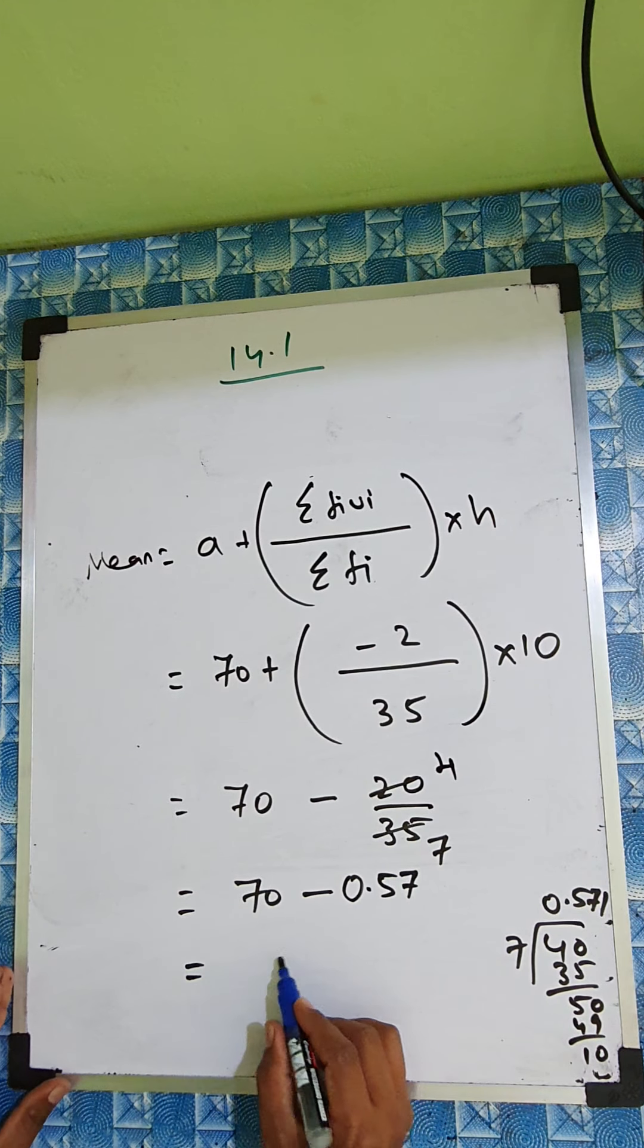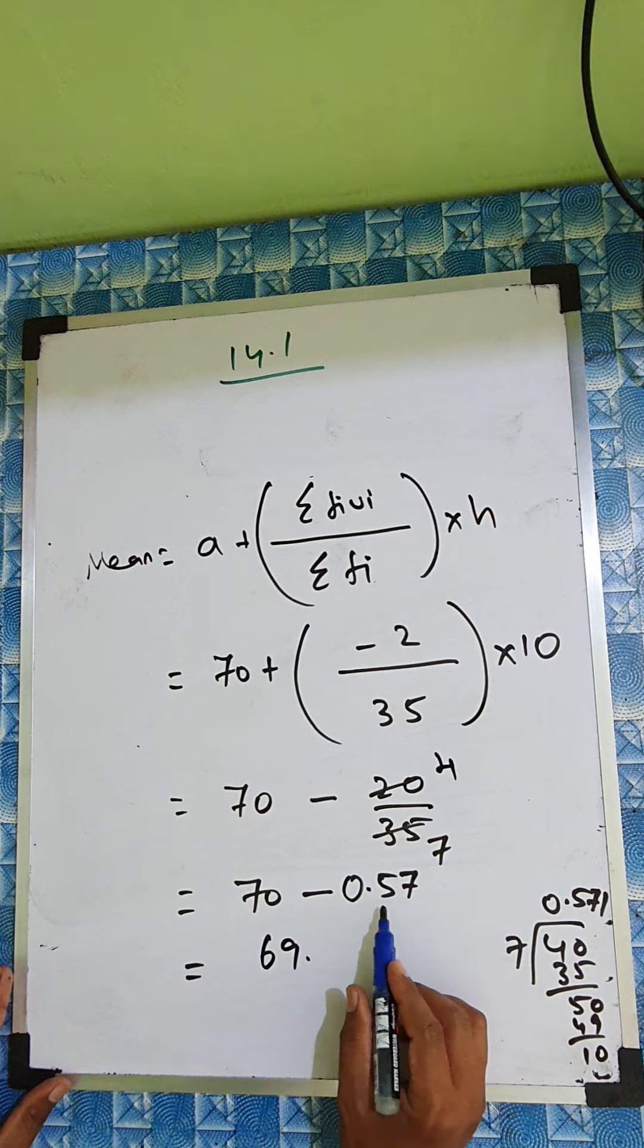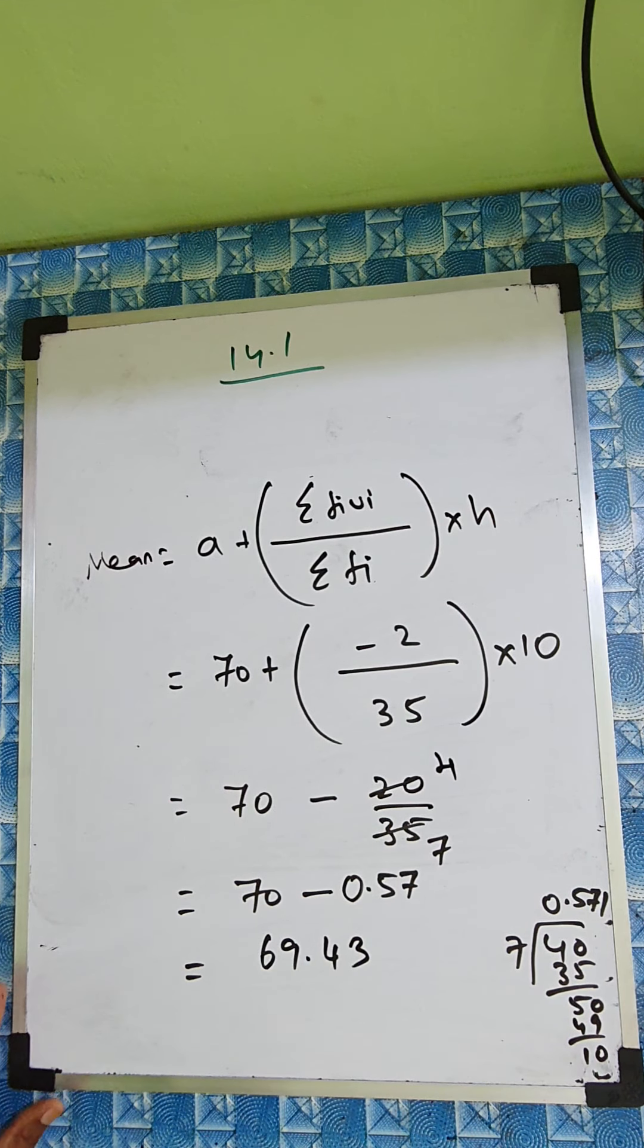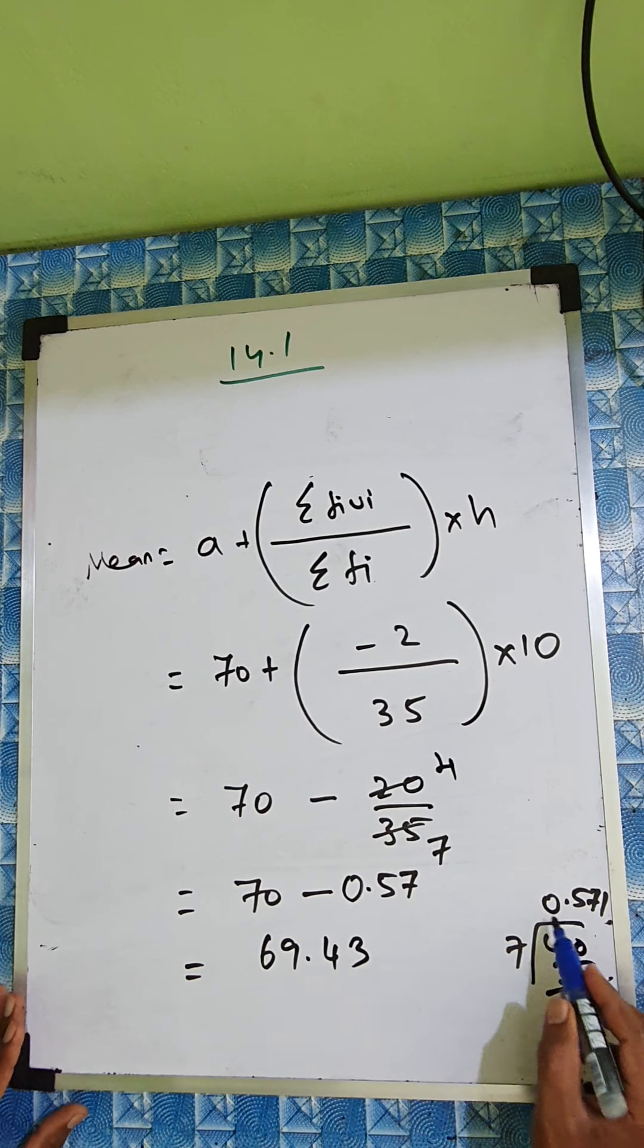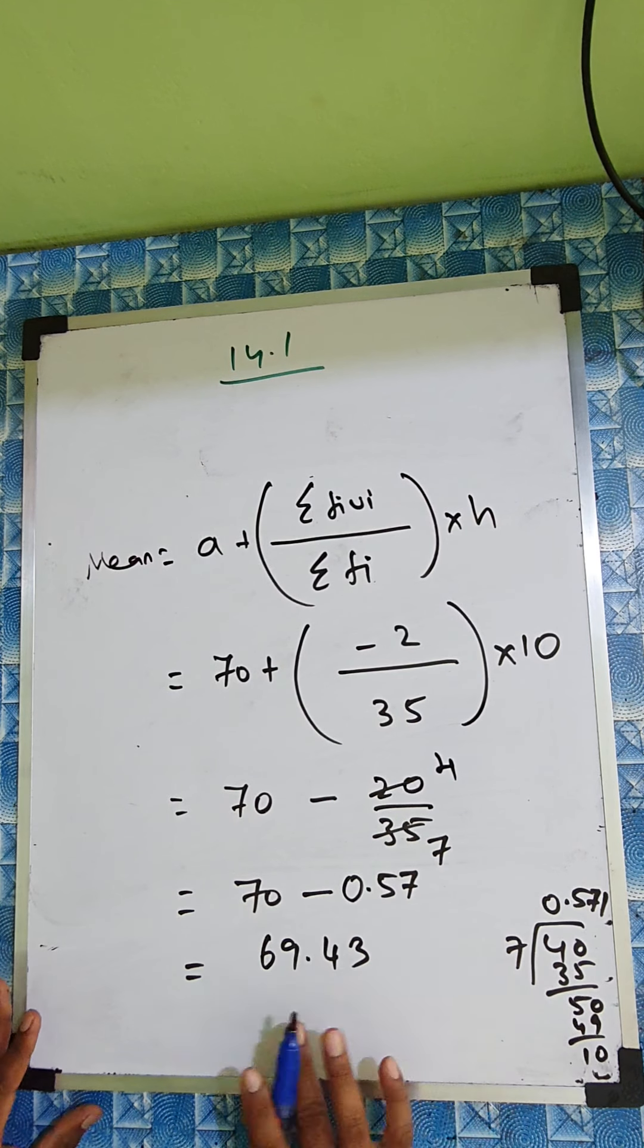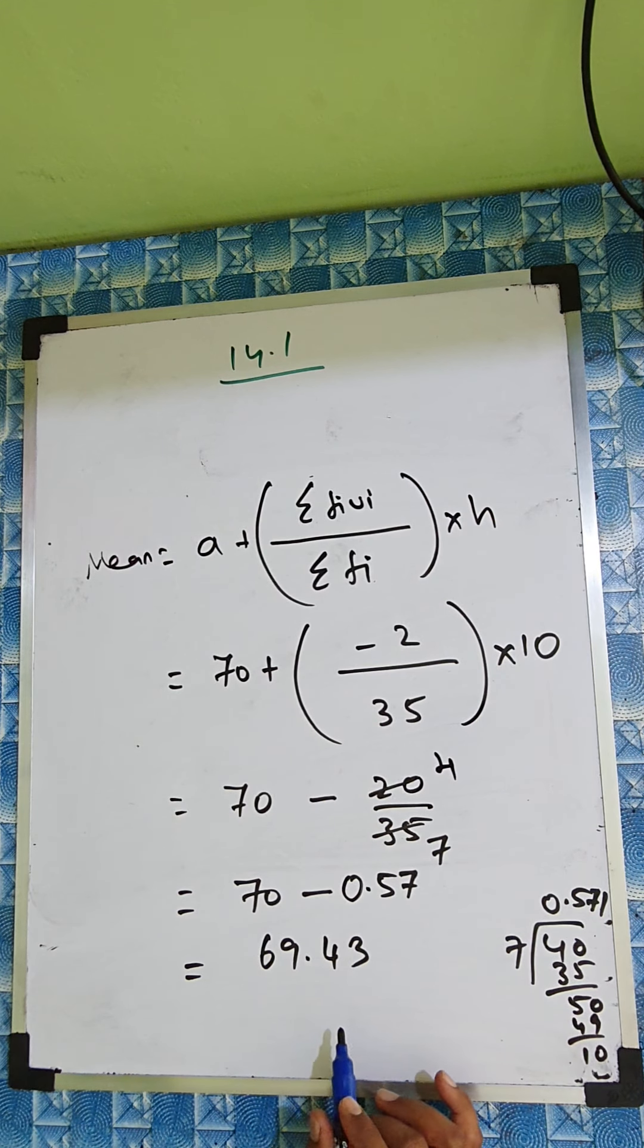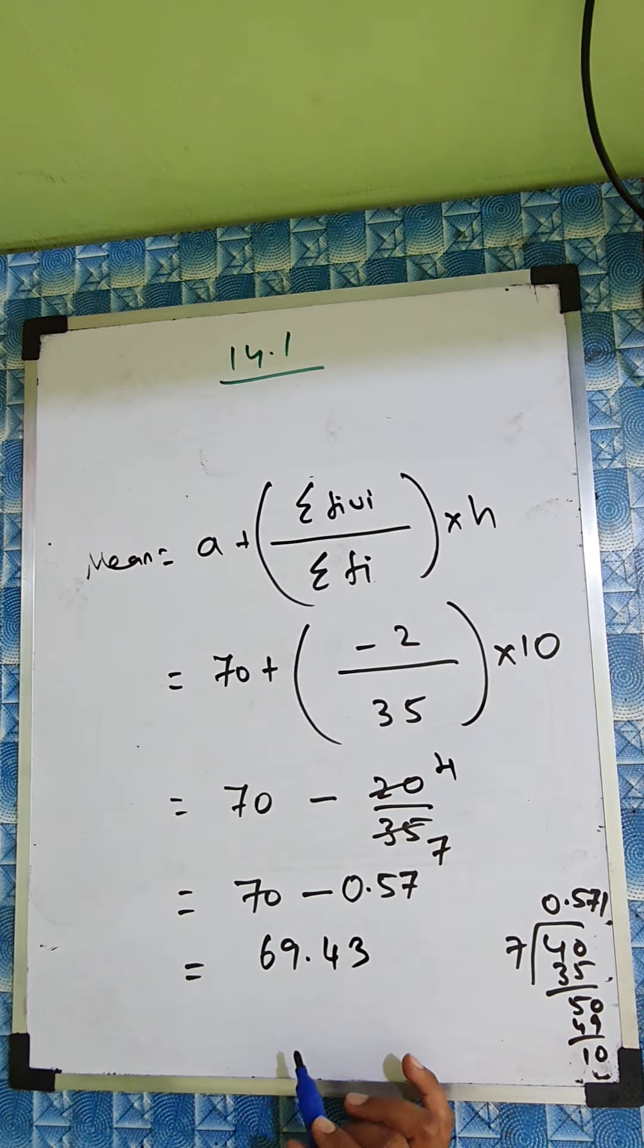So if you subtract here, 70 minus 0.57 will be 69.43. So the answer is 69.43. This division will go again, so we'll just stop here. Because after 7, it's 1 only coming. So we'll just stop here. So the answer for this question is 69.43.